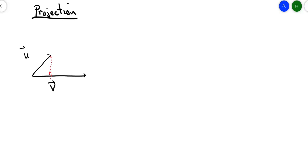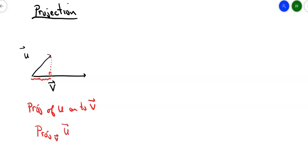So when I drop that perpendicular, this piece here is the projection of u onto v. I could also write it like this: the projection of u onto v. What that means is it's a fraction of the length of vector v. I could have done a projection exactly to the end of vector v, or it could even be beyond that point. But the way I drew it, I'm talking about a fraction of vector v — the projection of u onto vector v.